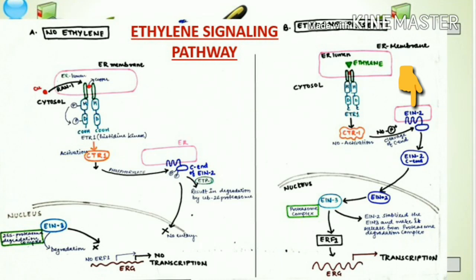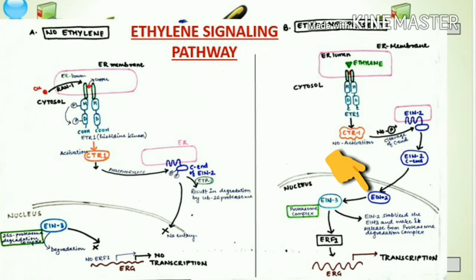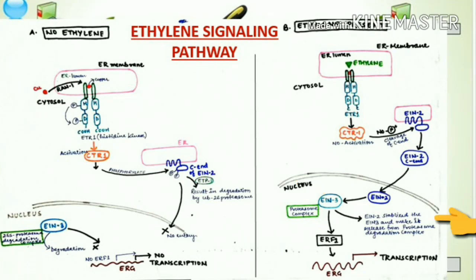Because CTR1 is not phosphorylated, it does not phosphorylate the C-terminal of EIN2 transmembrane protein. Due to the absence of phosphorylation — or dephosphorylation — there is a cleavage of the C-terminal of EIN2, and the C-terminal becomes free from the transmembrane domain of EIN2. This C-terminal of EIN2 then translocates to the nucleus, where it stabilizes EIN3. After stabilization, EIN3 is released from the proteasomal complex, inhibiting the degradation pathway.